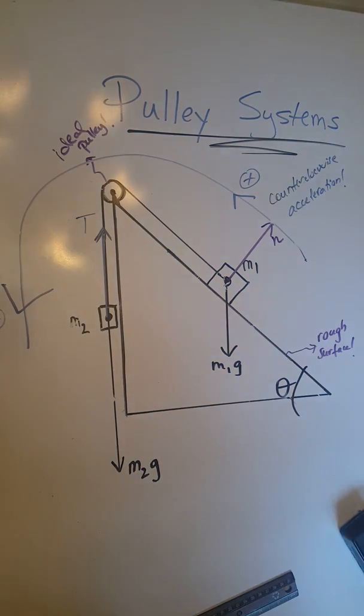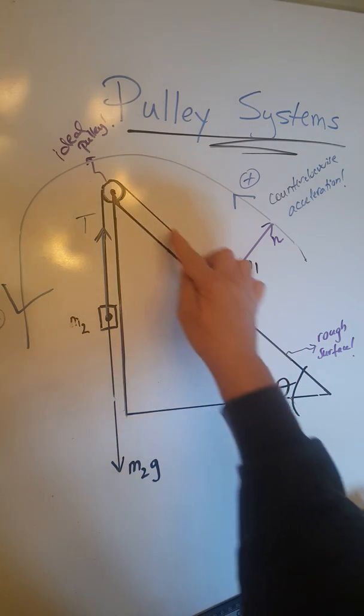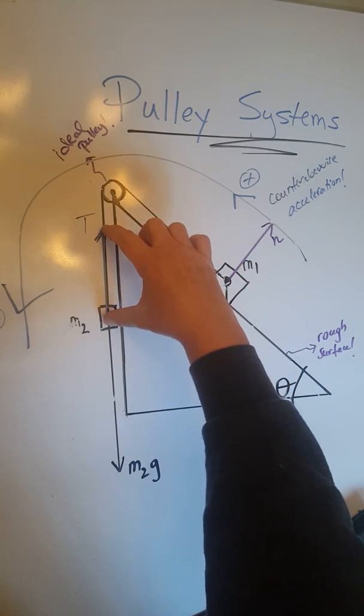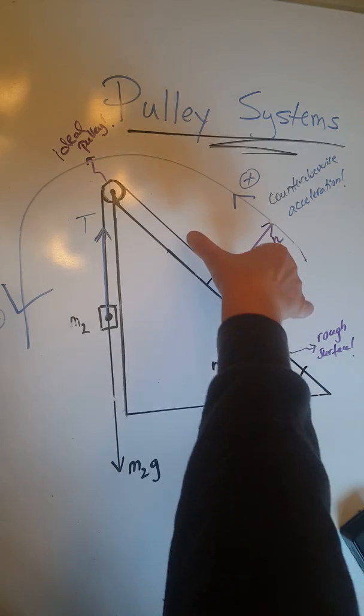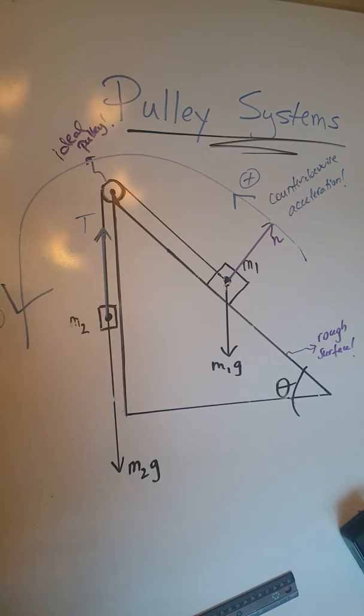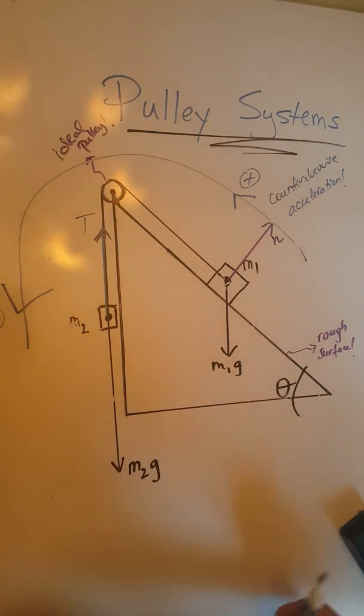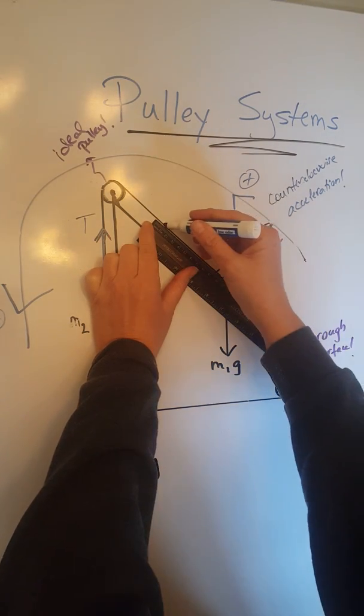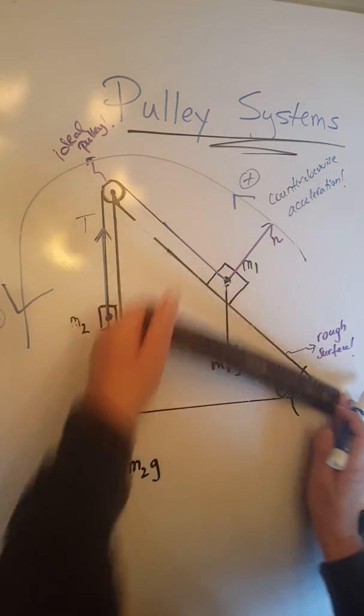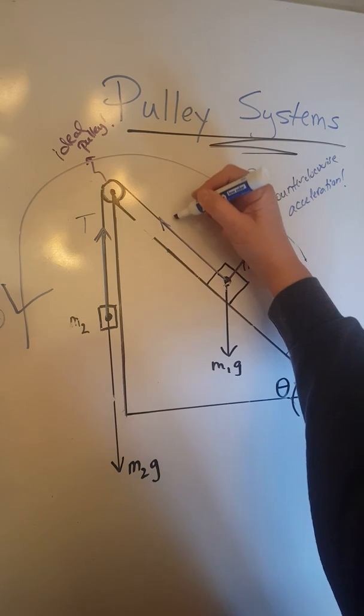And then we are going to have a tension force pulling on this object, which must be the same as this tension force, because there is only one string. So let me draw that now here, the same tension.